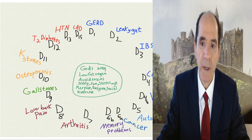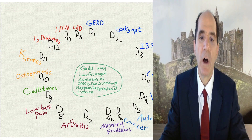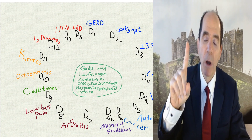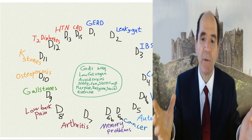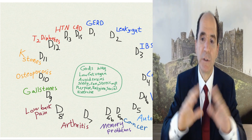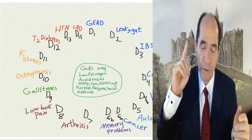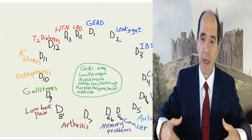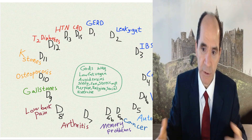This is part three of the video series called 'Is It All the Same Disease?' In part one, we showed how the mechanism of atherosclerosis causes disease all over the body. It plugs up the arteries to the brain, to the heart, to the legs and lower extremities — peripheral arterial disease.